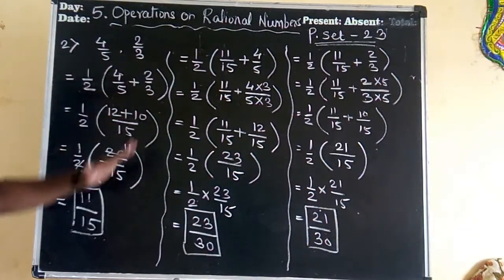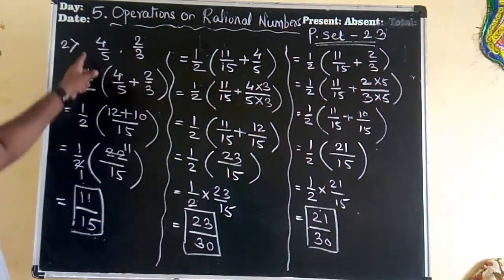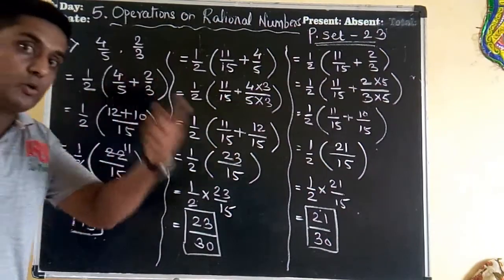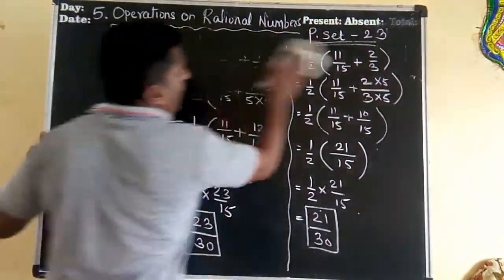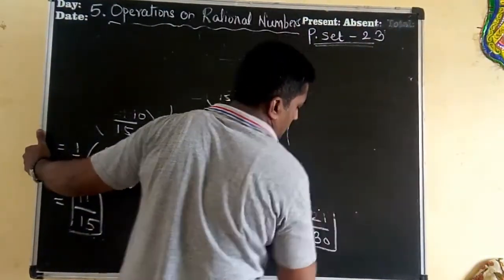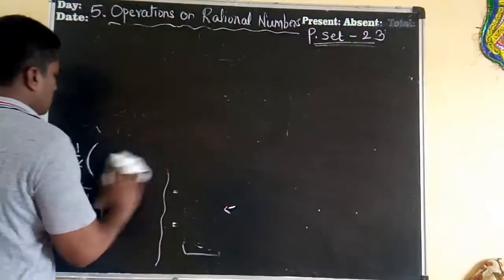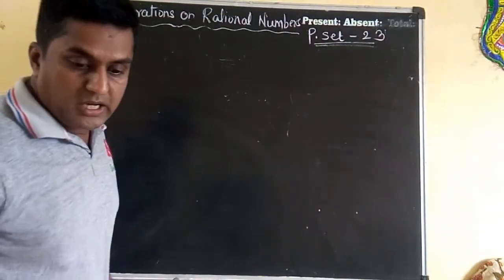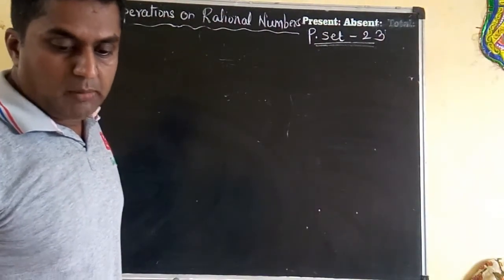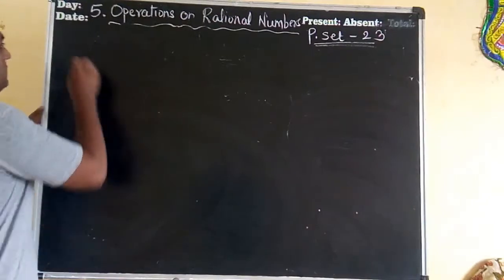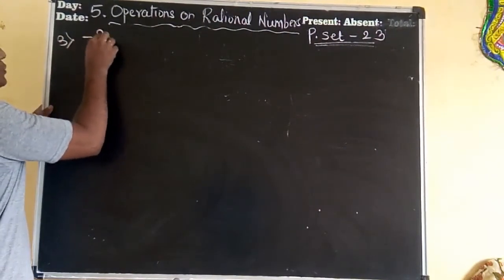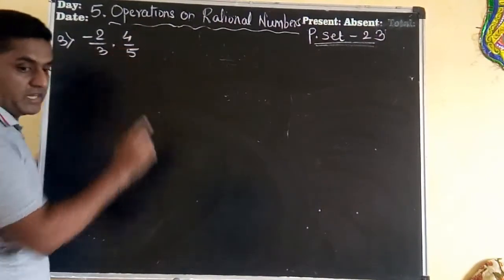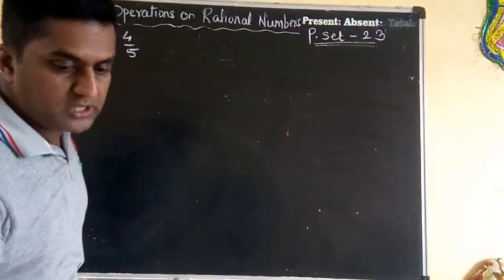The whole board has been used for just sum number 2. Now let us move on to the third sum. The third sum is minus 2 upon 3 and 4 upon 5 — we are going to use the same method. So it is equal to 1 upon 2 in bracket: minus 2 upon 3 being added with 4 upon 5.